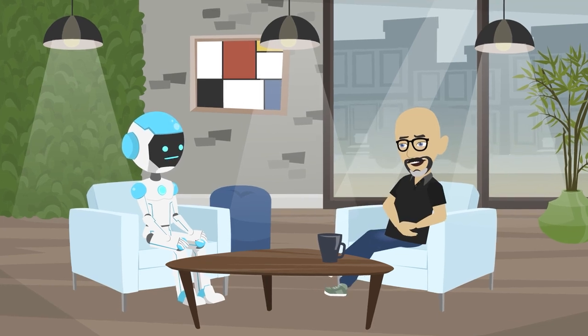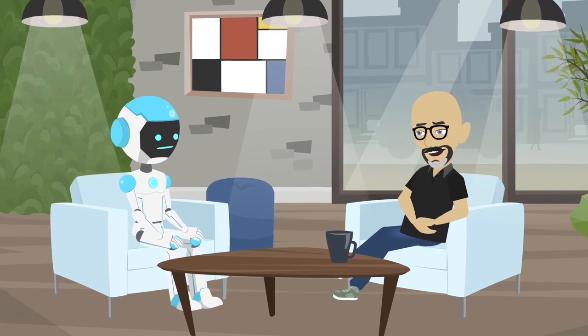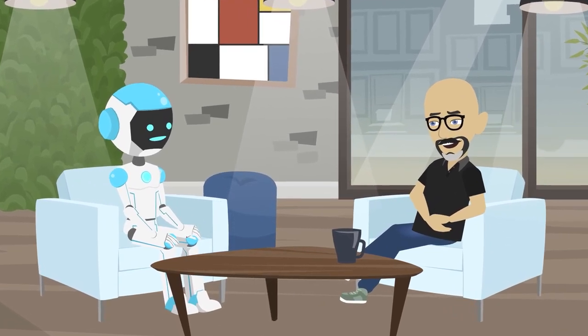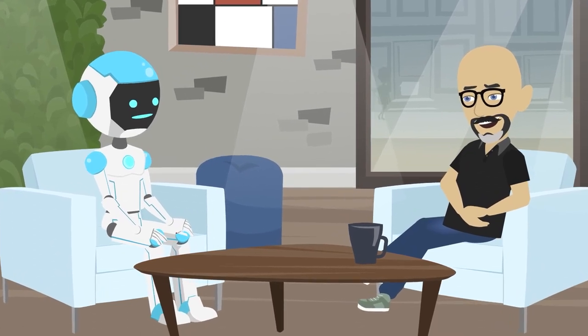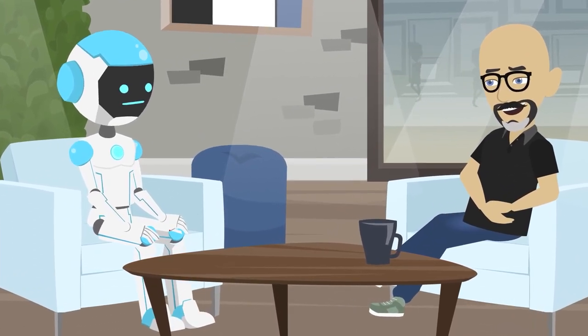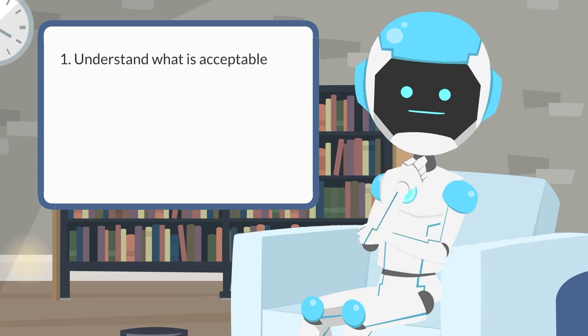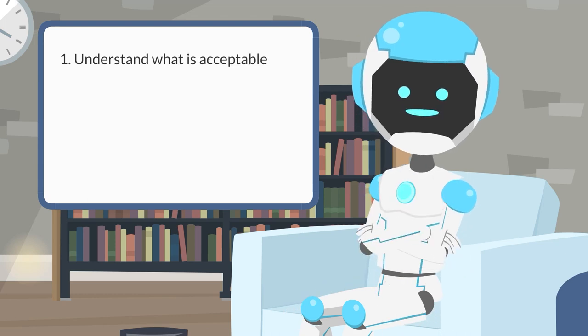It is important for students to use AI ethically and responsibly in their studies, and to avoid using it to engage in academic fraud. Here are a few ways that students can approach using AI in their studies in a responsible manner. Familiarize yourself with your school's policies on the use of AI and other technologies in academic work. Make sure you understand what is and is not acceptable, and follow these guidelines.